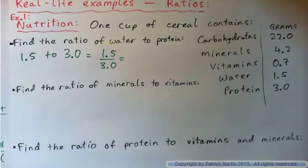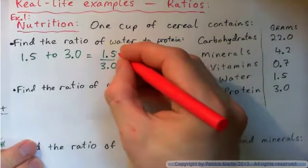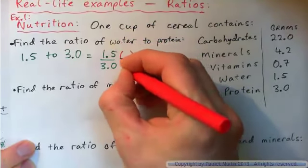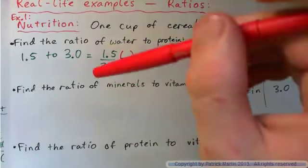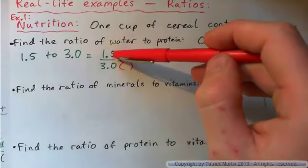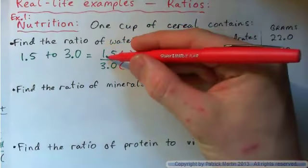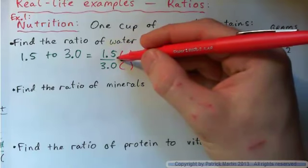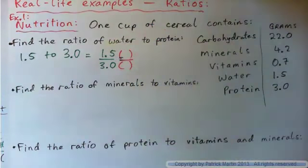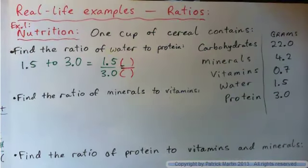Do you know what that something would be? What do I multiply 1.5 by to move the decimal place one place to the right? In other words, I want to turn 1.5 into 15. What do I multiply it by?